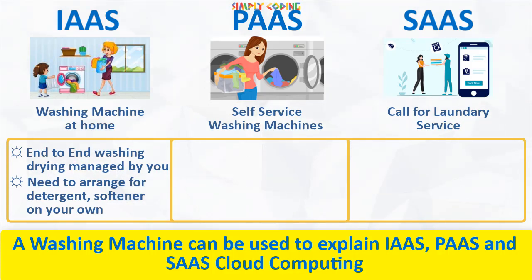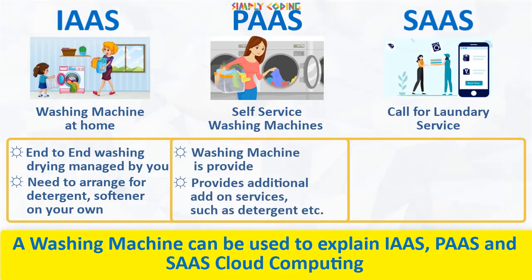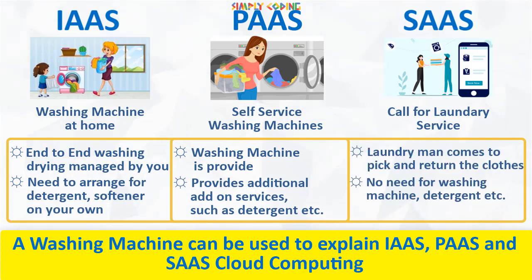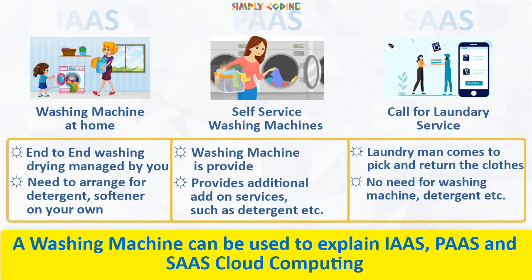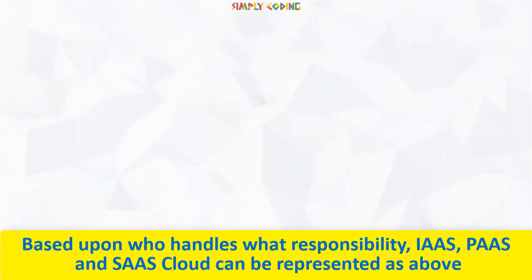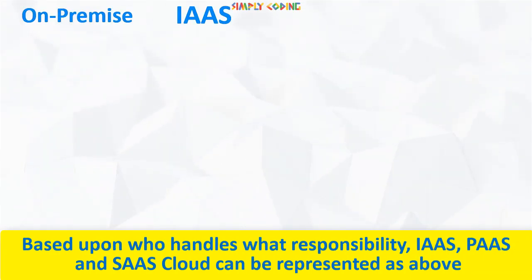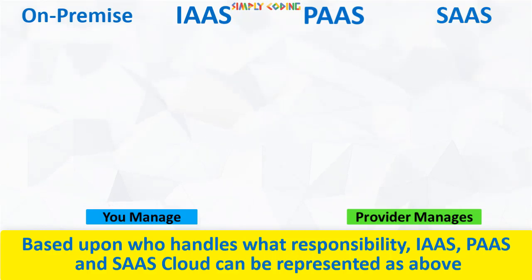Next is PaaS, or platform as a service. Here, you go to a laundromat or a common washing area to do your washing. The place may also provide you with detergent or softener for some extra fee. Next is software as a service, or SaaS. Here, you call for a laundry service, and the laundry man comes, picks up, and returns the clothes to you at your doorstep. Similarly, the primary thing that differentiates the three main categories of cloud computing from one another is who manages the different pieces of the IT stack.